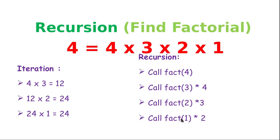Now we have reached the terminating condition because factorial one is itself equal to one. So we already have the value — one multiplied by two equals two. This function execution is finished and it returns two to the earlier calling function. Two goes back, and that function multiplies by three, and returns six. Then six is multiplied by four, and eventually they arrive at the answer 24.